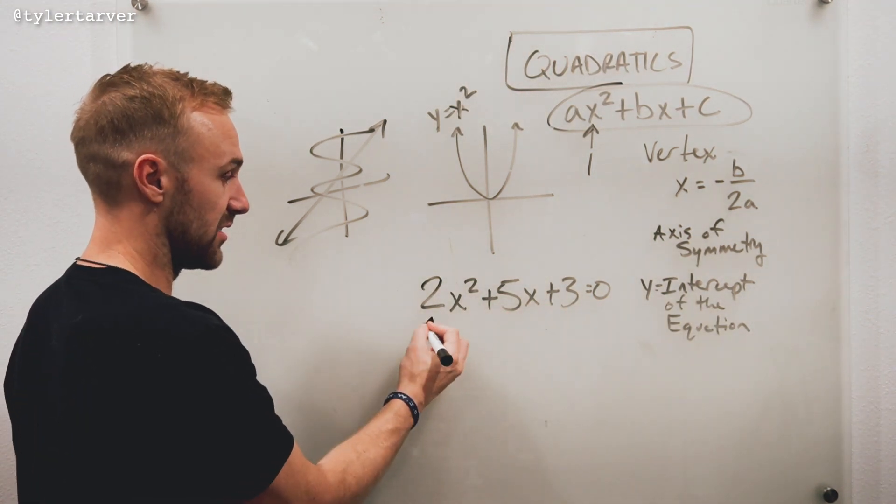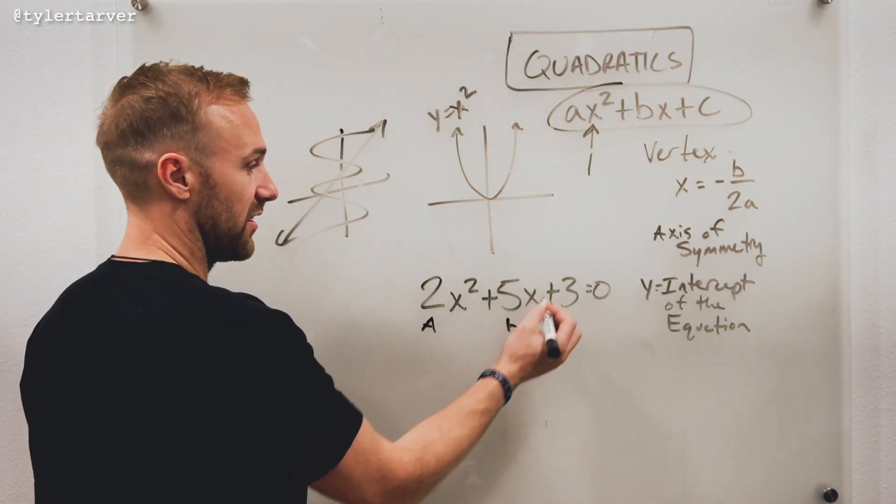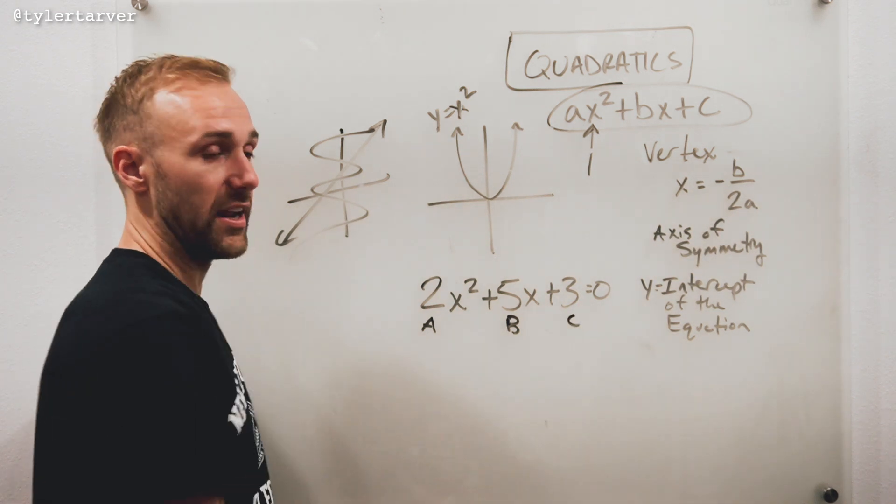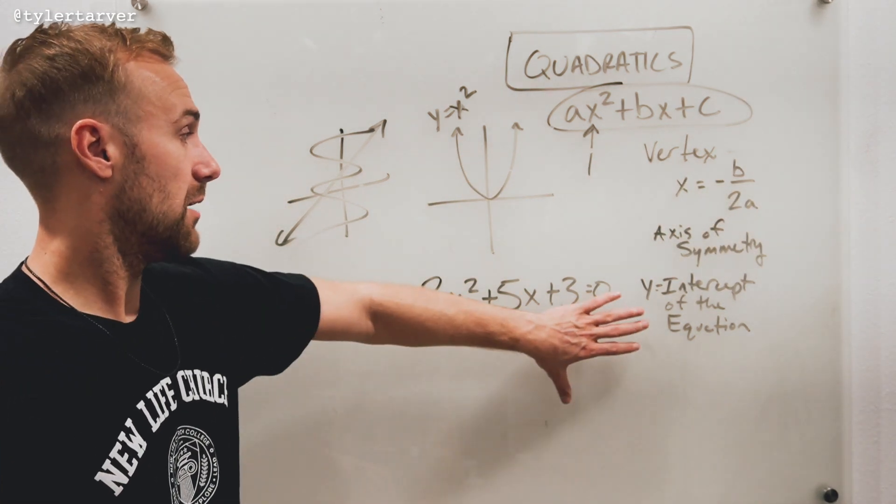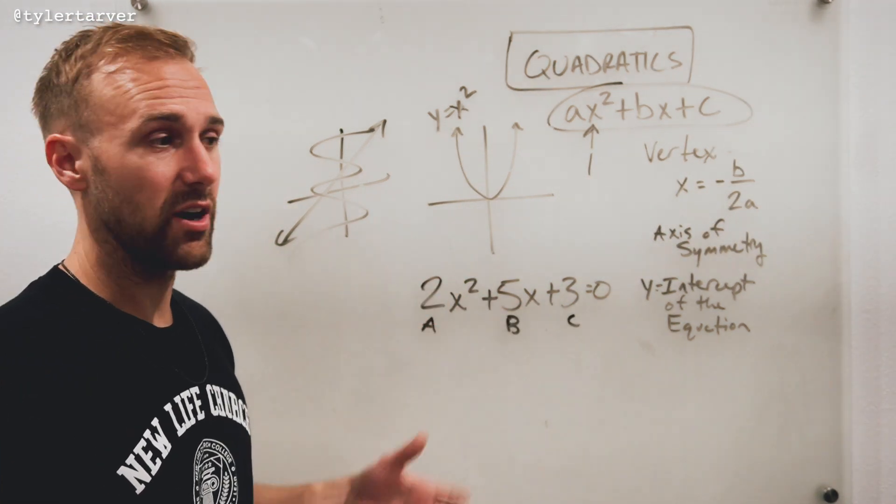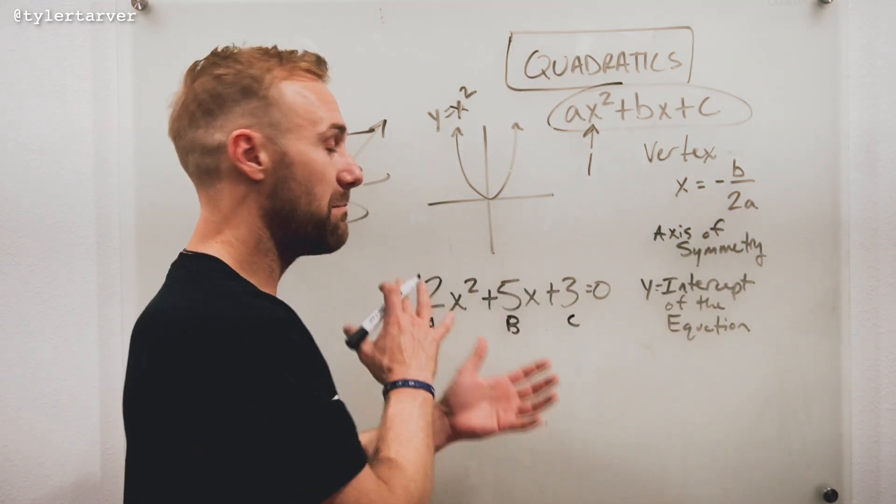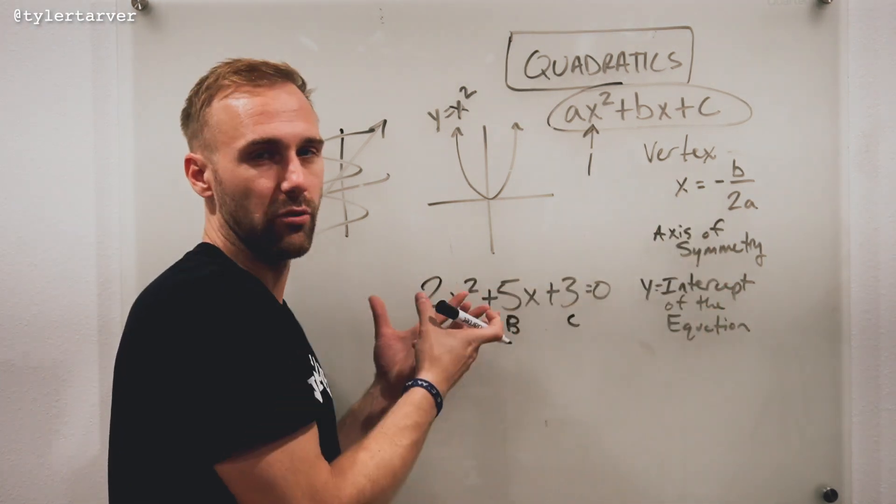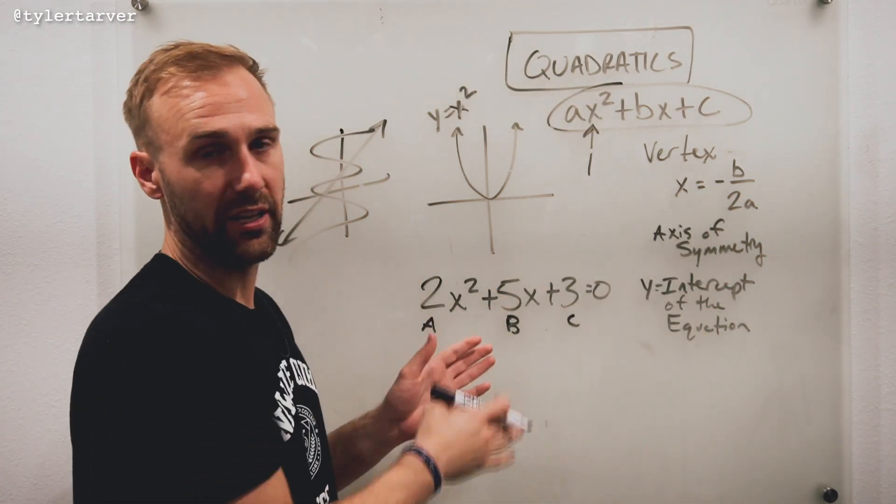Our A is 2. Our B is positive 5. Went capital and lowercase. And our C is 3. Now that's pretty much it. If you've got x squared, you know it's going to be a quadratic. It might be mixed up on there. Like you can have stuff on the other side of the equal sign, but you'll just move things over to the same side and you can make it look like this.